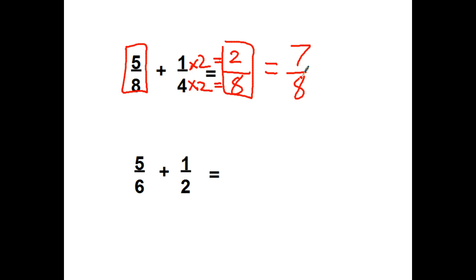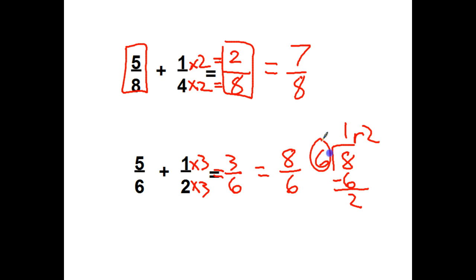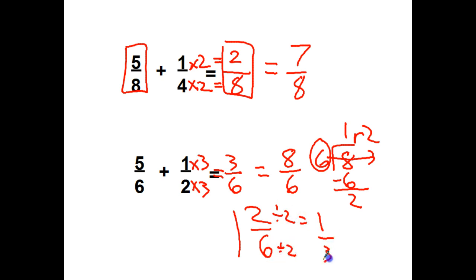Let's try the one on the bottom. 5 sixths plus 1 half. Is there something I can take 2 times to get it to 6? Yes, times 3. If I take the bottom times 3, I'm taking the top times 3. So 1 half is really the same as 3 sixths. 5 sixths plus 3 sixths gets me 8 sixths. 8 divided by 6 goes one time. Subtract. I've got a remainder of 2. 1 and 2 sixths. However, notice that 2 and 6 are both even, so I can divide the fraction part of my mixed number by 2, and that's going to equal 1 third. This 1 still stays the same. So instead of 1 and 2 sixths, I have 1 and 1 third.